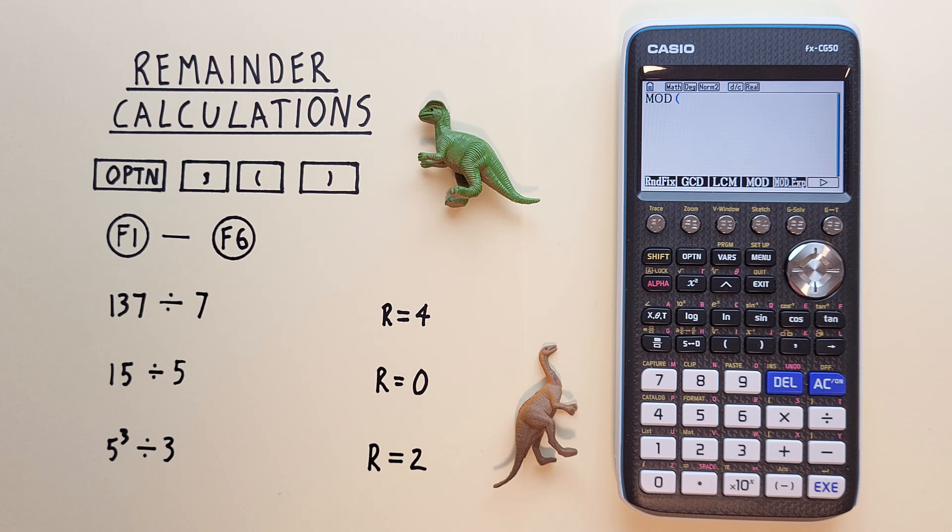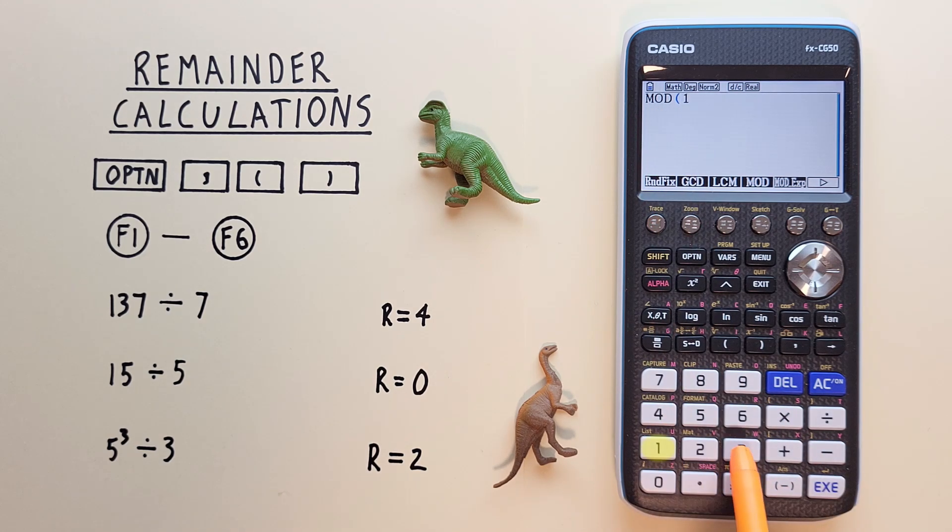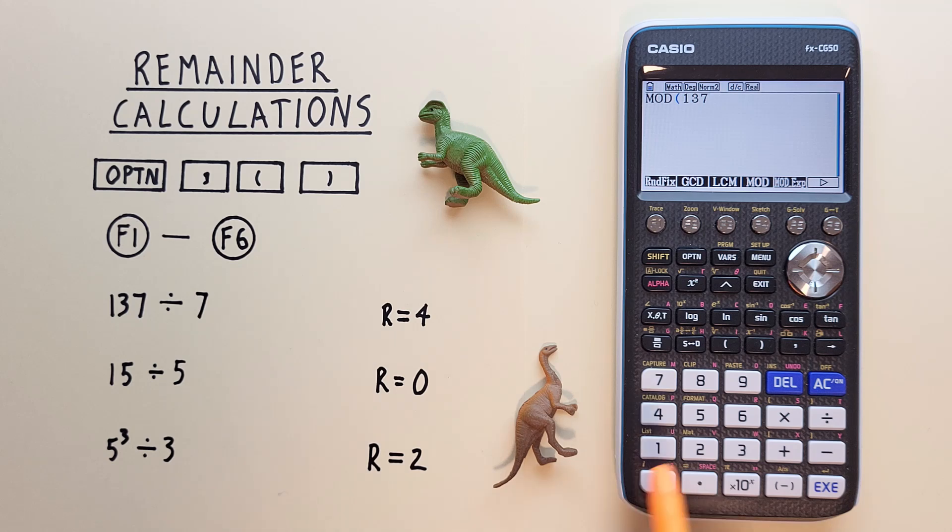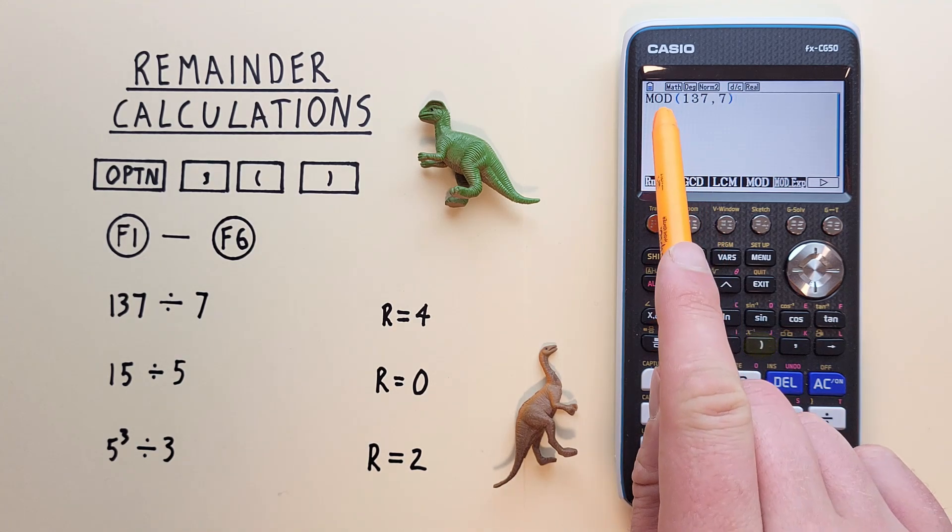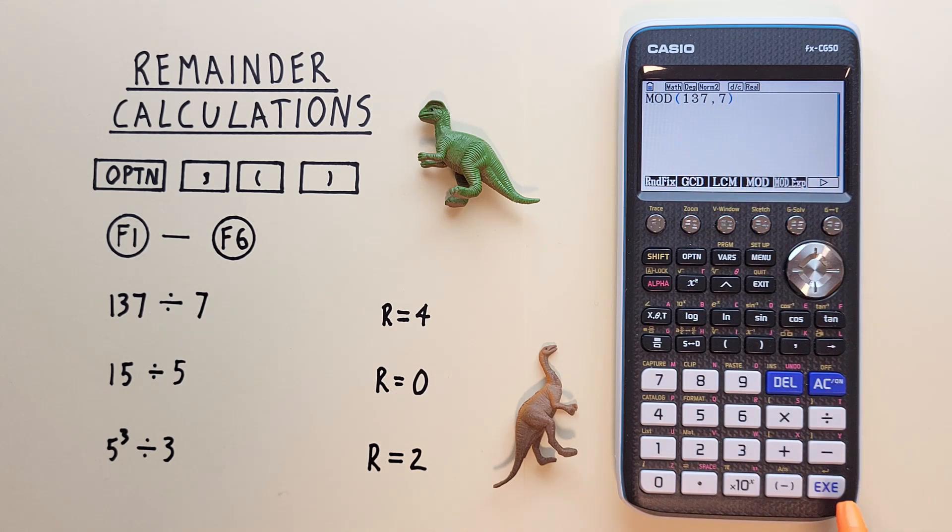Let's find the remainder or modulus of 137 divided by 7. Now that we have mod on our screen, we can enter 137 inside the brackets and then hit the comma, and then the 7, close our brackets. So there we have the modulus of 137 divided by 7, and hit EXE.